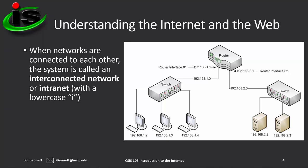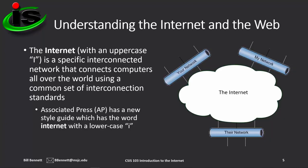Notice in the graphic to the right, we have two networks. The network on the left has three computers connected to a switch, and there are two servers on the network on the right connected to a switch. The switches then are connected to a device known as a router, and the router's job is to switch communications or messages between networks. The internet with an uppercase I is a specific interconnected network that connects computers all over the world using a common set of interconnection standards.